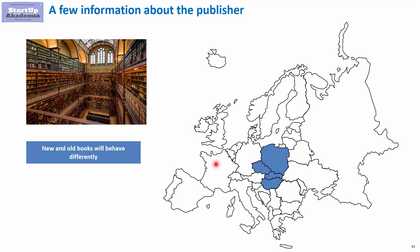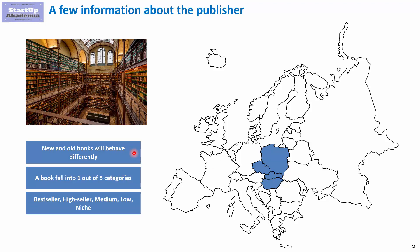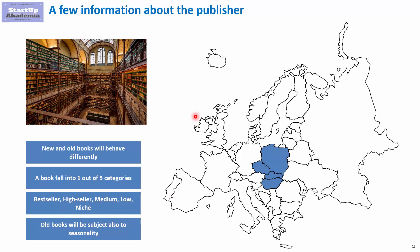He divides each group into four categories: bestseller, high seller, medium, low, and niche. On top of that, all books are also subject to seasonality, so the sales in January will be totally different than in June, July, or December.